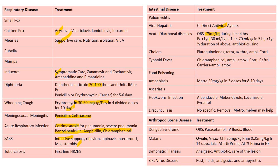Acute diarrheal diseases: ORS is the treatment — 75 ml per kilogram during the first four hours IV. If the child is less than one year: 30 ml per kilogram in half an hour and 70 ml per kilogram in two and a half hours; if greater than one year, half the duration. Antibiotics have a role. Zinc has a role in prevention of further diarrhea episodes. Cholera treatment: fluoroquinolones, tetracycline, azithromycin, ampicillin, cotrimoxazole. Typhoid: chloramphenicol is first choice.